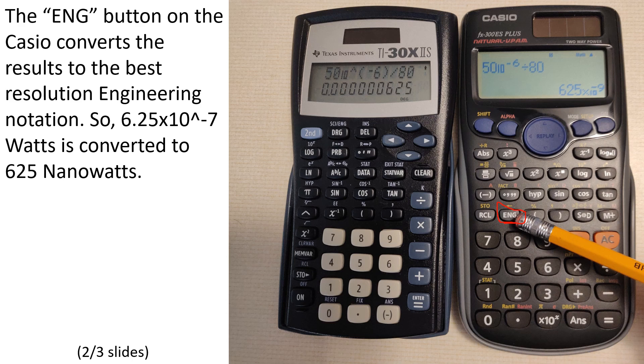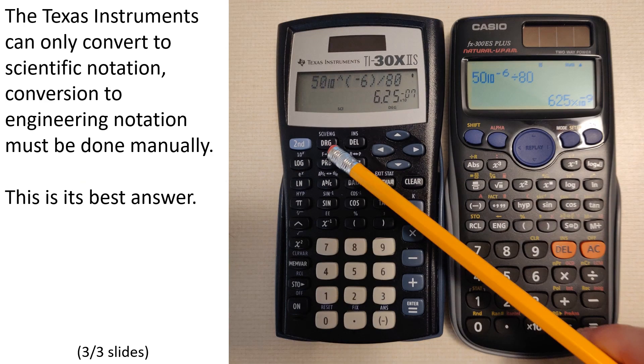The ENG button on the Casio calculator converts the results to the best resolution engineering notation. So, 6.25 times 10 to the negative 7 watts is converted to 625 nanowatts. This is especially handy because our electrical multimeters also take readings in engineering notation, such as megawatts, kilowatts, milliwatts, microwatts, and nanowatts. Subsequent presses of the ENG button will increase the resolution, thus sliding the scale from milli to micro to nanowatts. Pressing shift followed by the ENG key will decrease the resolution, causing it to go from nanowatts to microwatts to milliwatts. The Texas Instruments can only convert to scientific notation. Conversion to engineering notation must be done manually. So, 6.25 times 10 to the negative 7th is its best answer.